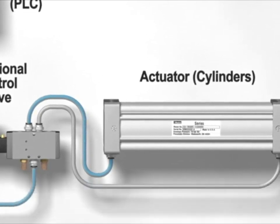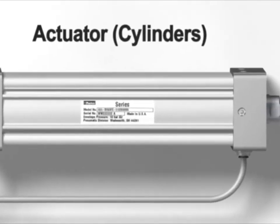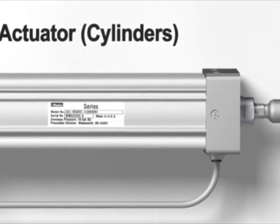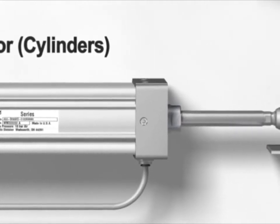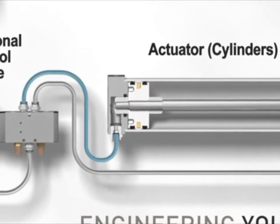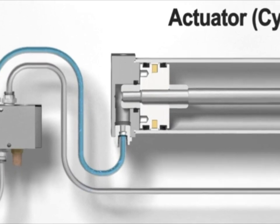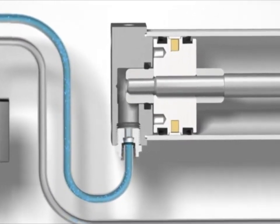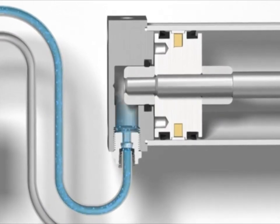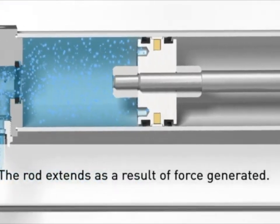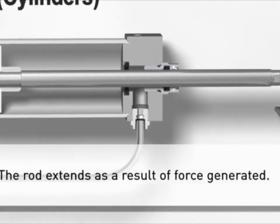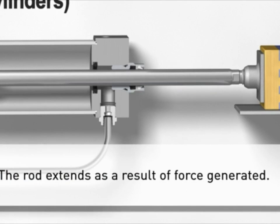Parker makes a wide variety of actuators — or cylinders — that convert compressed air into motion. The most common type is the rodded variety. The actuator creates motion using the energy of the compressed air supplied by the directional control valve. When compressed air pushes on the piston via working port four connected to the cap end, the piston is forced forward inside a hollow cylinder body. The piston is attached to a rod that extends as a result of the force generated. The actuator continues to move until it reaches its physical limit, or if the load — force resisting motion — is higher than the air force, in which case the pressure regulator can be adjusted.